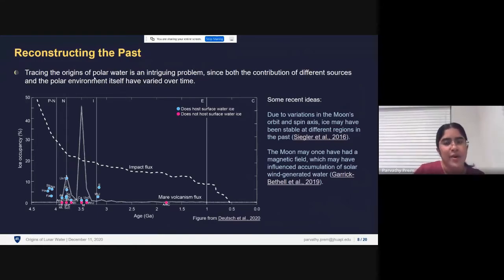This is a really interesting problem because the different sources that might have delivered water to the poles have varied through time. If you look at the dashed and dotted lines here, you can see that impactors, one potential source of water, the impact flux has steadily declined over time. The volcanic flux had two notable peaks at around 3.8 and 3.5 billion years ago. This is a figure from a paper by Ariel Deutsch. Marked on this plot are a few different craters. Ariel looked at craters which have ice and craters which have no ice. This is a puzzle - you have craters of the same age, some of them have water ice, some of them don't have water ice. Why is that?